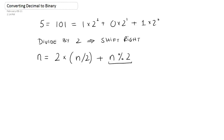In this video, we're going to be looking at how to convert a decimal number to its binary equivalent. Before we look at the procedure, let's take a very simple number, for example 5, and look at its binary equivalent — so it's 101.